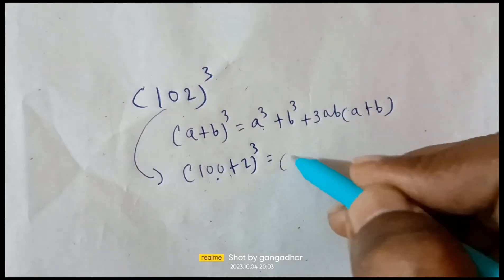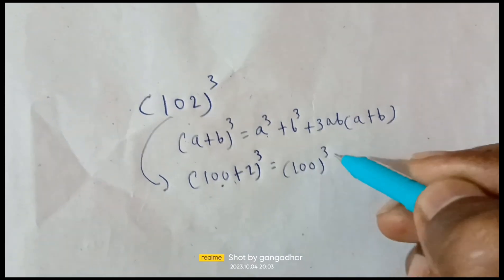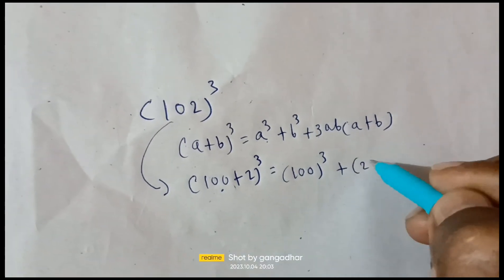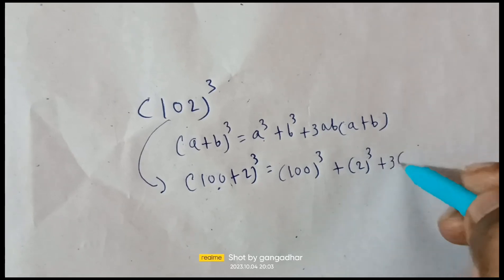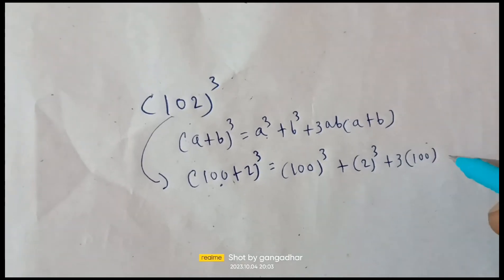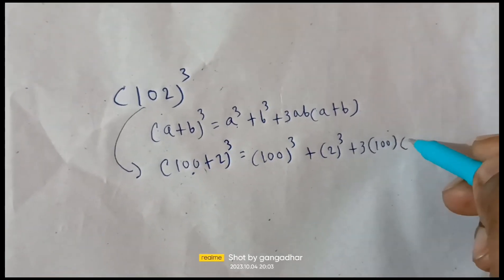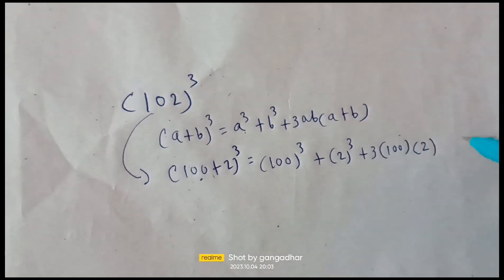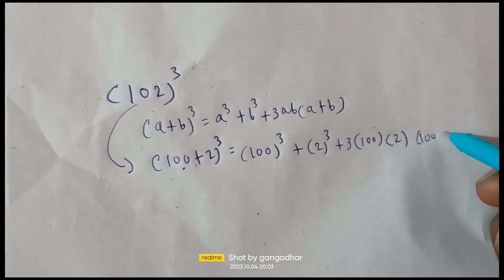Substituting into the formula: a³ means 100³, plus b³ means 2³, plus 3 times a (which is 100) times b (which is 2), times (100+2).